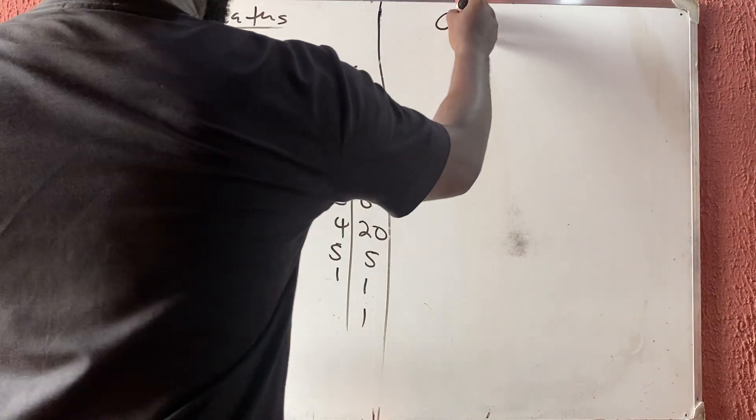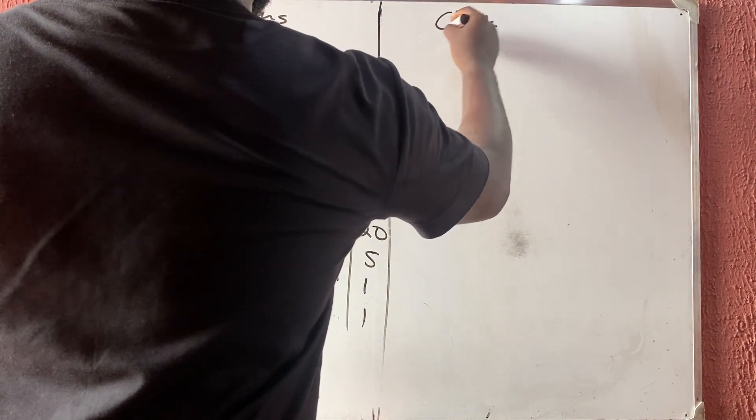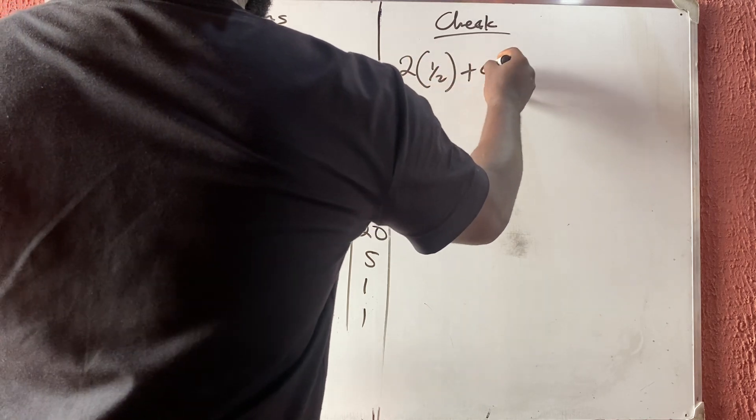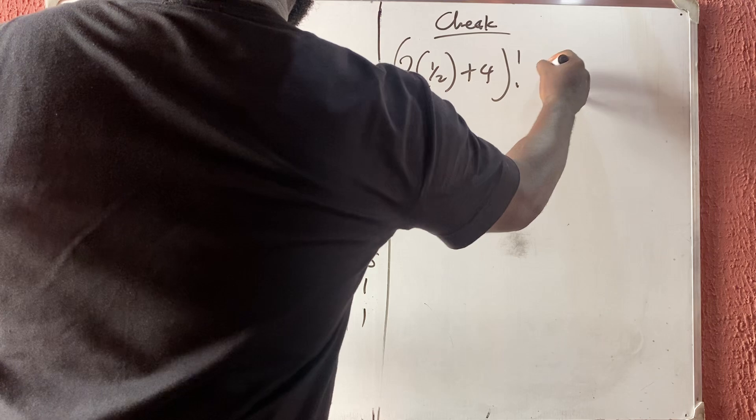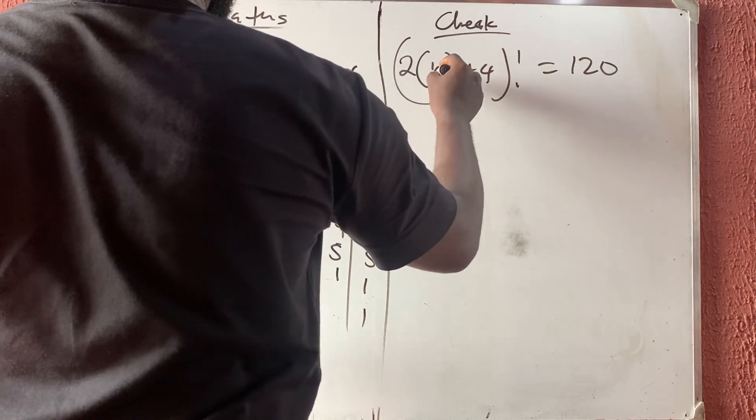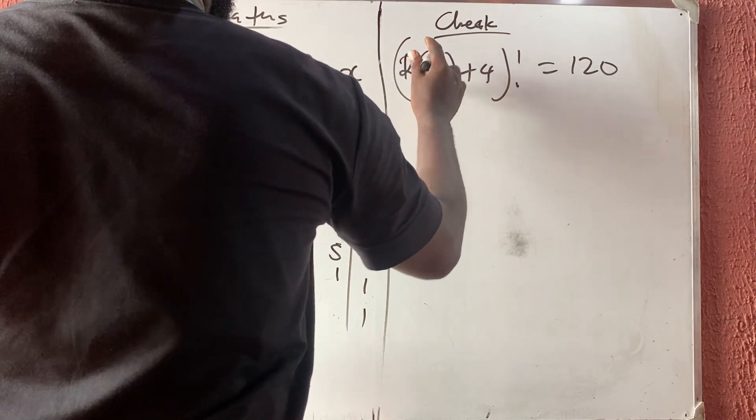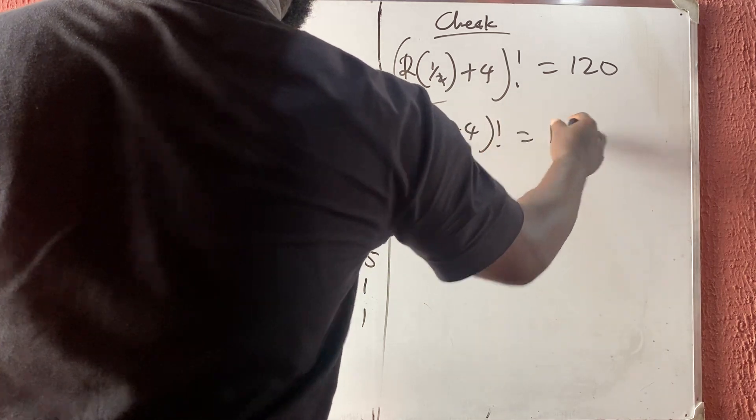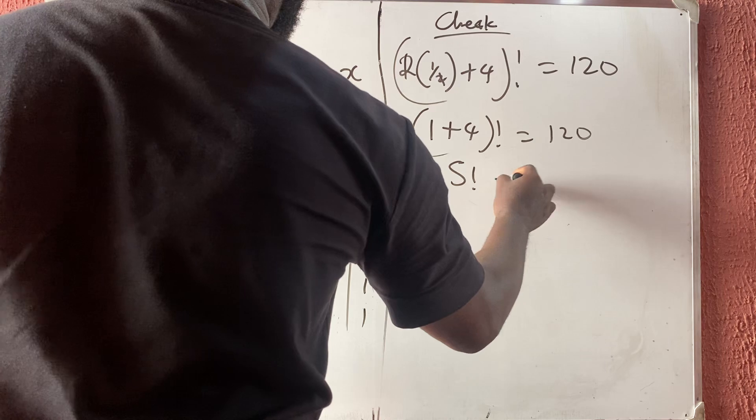If you want to check, I'll have that 2 into 1 over 2 plus 4, all factorial is the same thing as 120. Let us check. This into this is gone, so I'm having 1 plus 4, all factorial is equal to 120. 1 plus 4 is 5. 5 factorial is 120, yes.